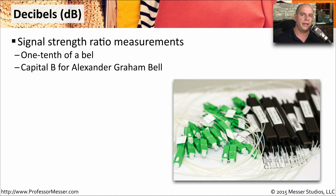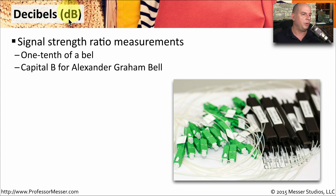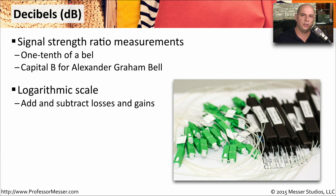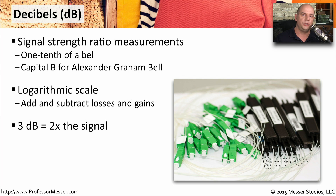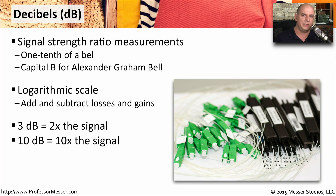We tend to measure signal strength in relative terms using decibels. This is a ratio of how much signal strength we have on a particular medium. The decibel stands for one tenth of a bell — the B is capitalized because it stands for Alexander Graham Bell. When you look at decibel measurements, you'll notice it's not a linear scale; it's a logarithmic scale. A 3 dB change represents a factor of two times — either signal strength or signal loss. At 10 dB, there is a 10 times difference in signal strength.